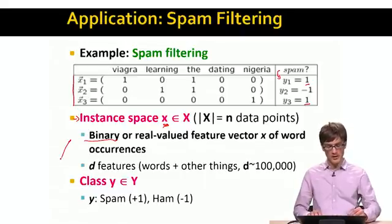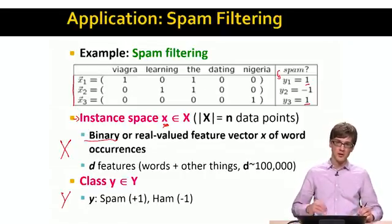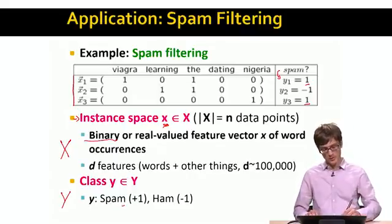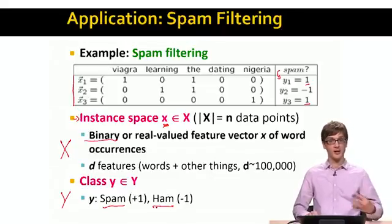Now, having described the instances x, the question is what is the class space Y? Our class is very simple. It's a binary variable, so it's a classification problem, where we want to decide whether a given email is spam or whether it's ham, whether basically it's not spam.